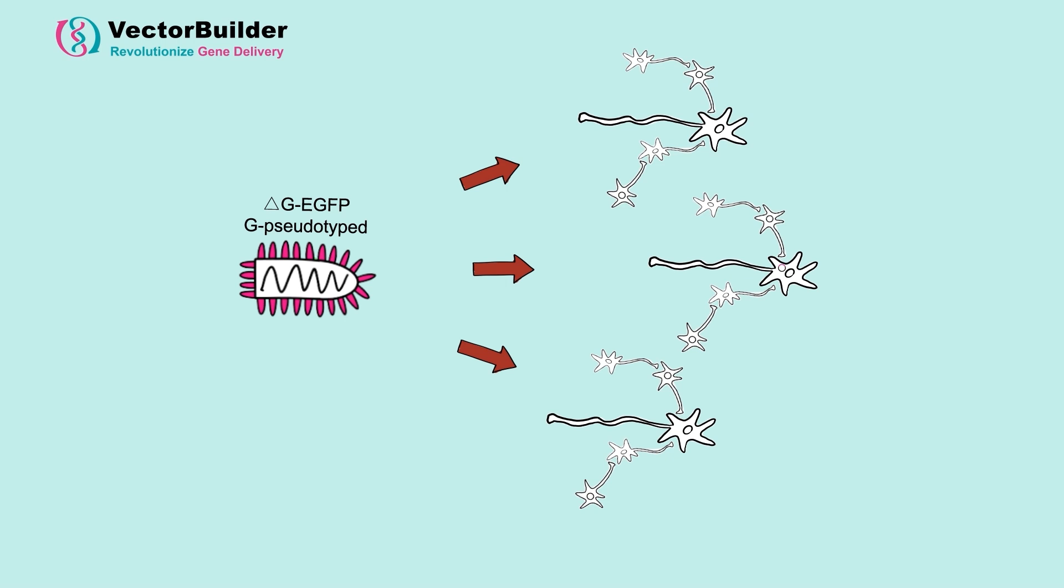However, there is very little selectivity within the primary neurons. Essentially, any neurons within the proximity of the virus that have receptors for this G protein may be targeted.